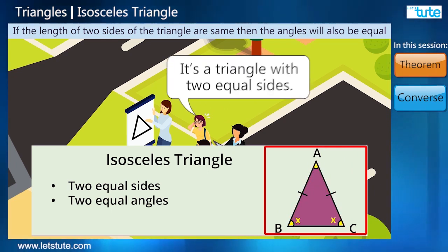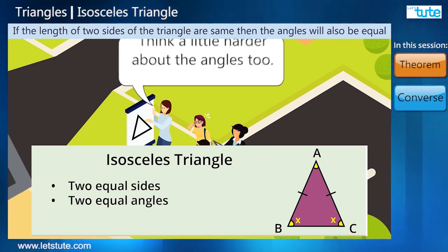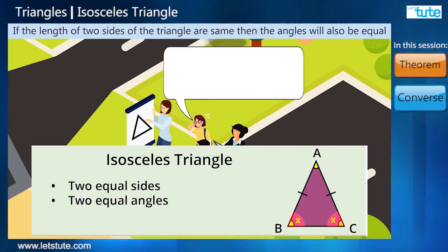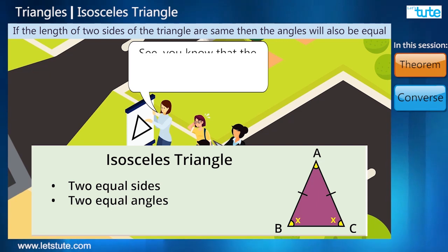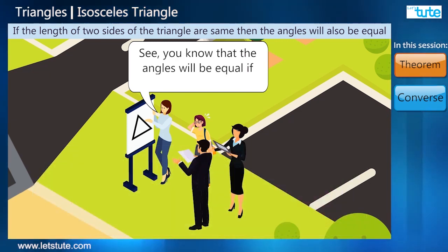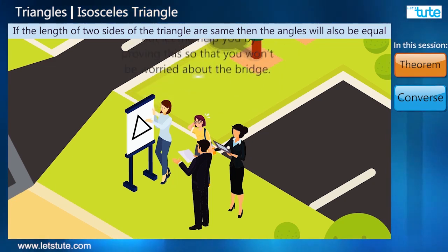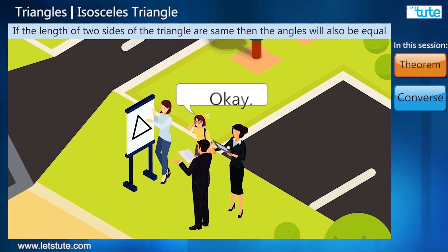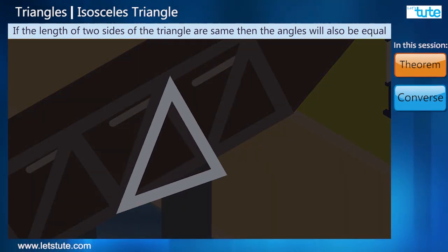I was happy as I studied that in the previous year. I said yes and also added it is a triangle with two equal sides. She asked me to think a little harder about the angles too. I recollected that yes, the angles opposite to the equal sides of the triangle are also equal. She said see, you know that the angles will be equal if the sides are equal, but let me help you by proving this so that you won't be worried about the bridge.